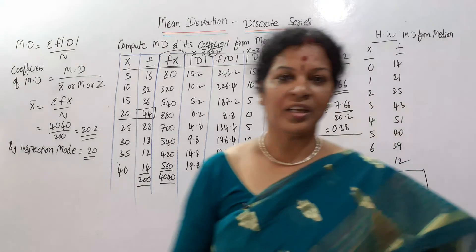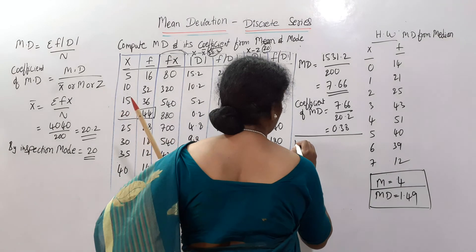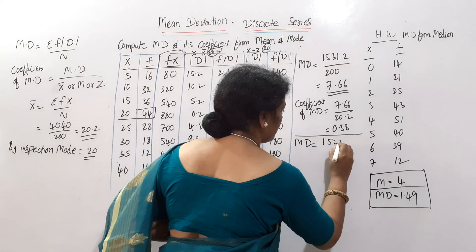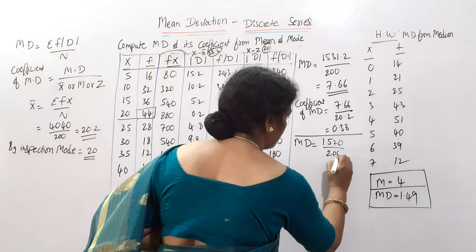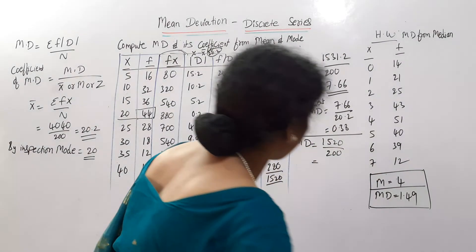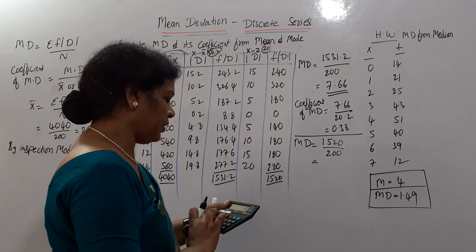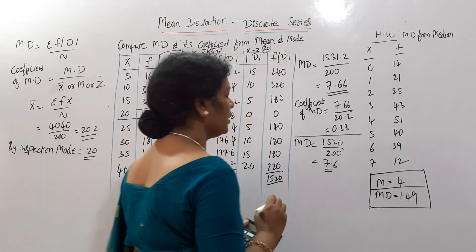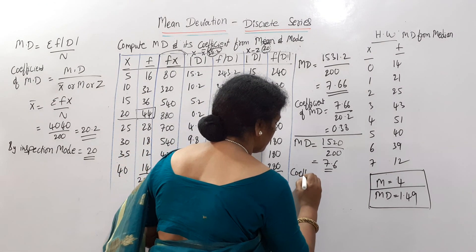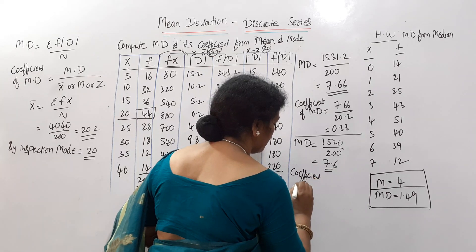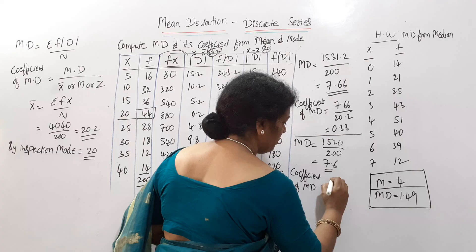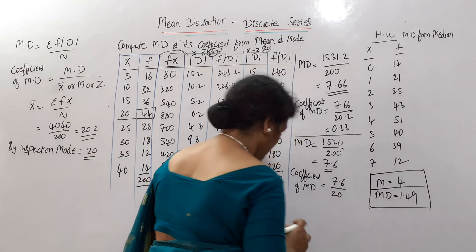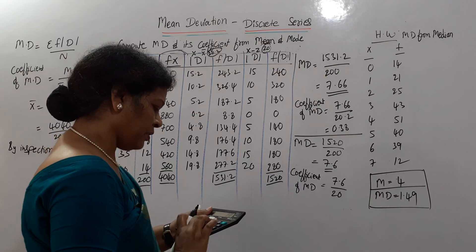Mean deviation from mode = sigma f into mod d divided by n = 1520 divided by 200 = 7.6. Then the coefficient of mean deviation from mode = 7.6 divided by z = 7.6 divided by 20 = 0.38.